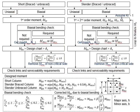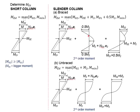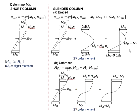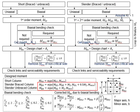Next, we look at the slender column subjected to uniaxial moment. The calculation steps here seem to be quite identical to the short column, except that it involves the second order moment. These are the second order moments. Due to different responses of the column under the braced and unbraced conditions, the calculations to determine the M_Ed vary slightly. You will need to be careful whether the column is braced or unbraced. The equations to generate M_Ed are given here. Once you have acquired the first order and the second order moment, you will use them to generate the M_Ed, and then subsequently apply the M_Ed into the chart in order to find the A_s.